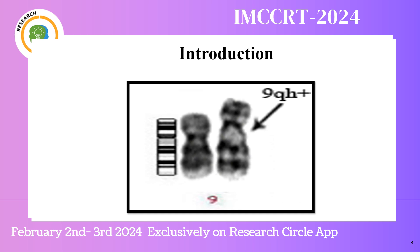What is exactly 9 QH plus? As you can see in the image, the heterochromatin region of the chromosome is increased in the second chromosome compared to the first normal chromosome. This is called polymorphism, and heterochromatin regions are normally considered as normal variants.